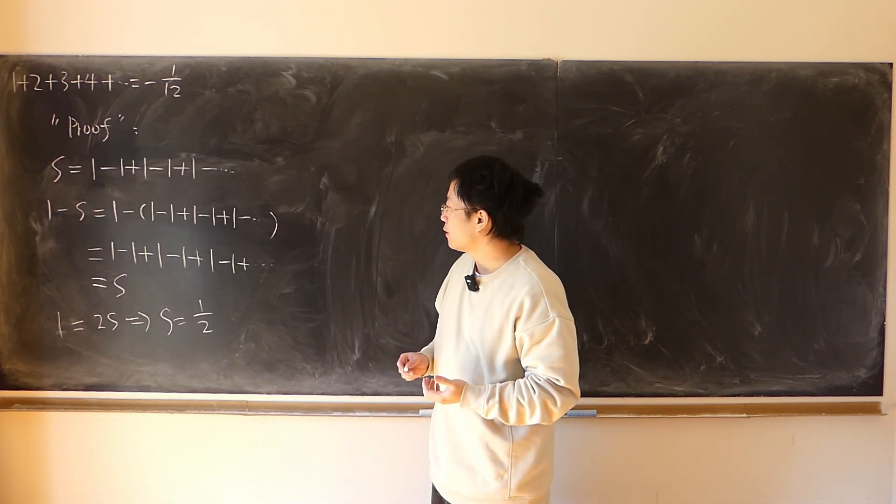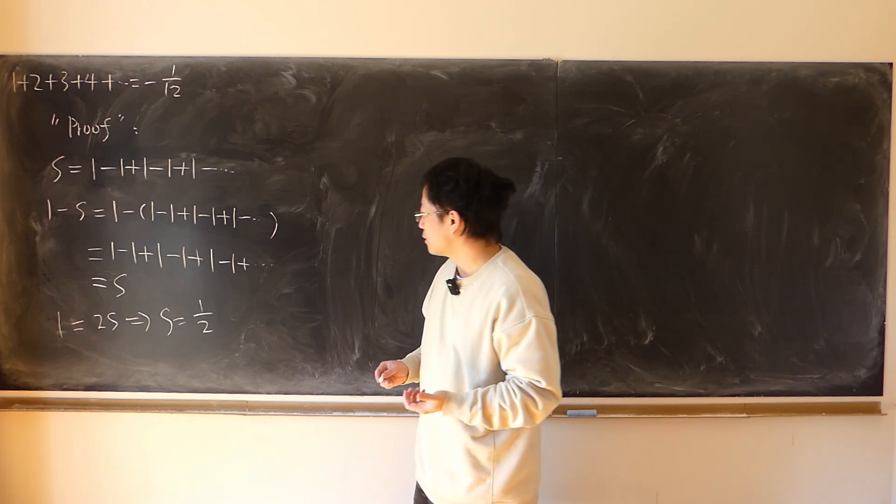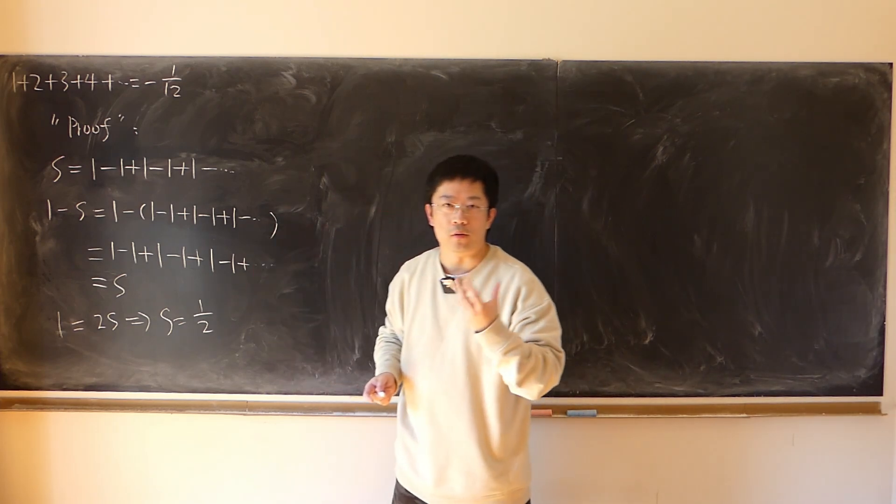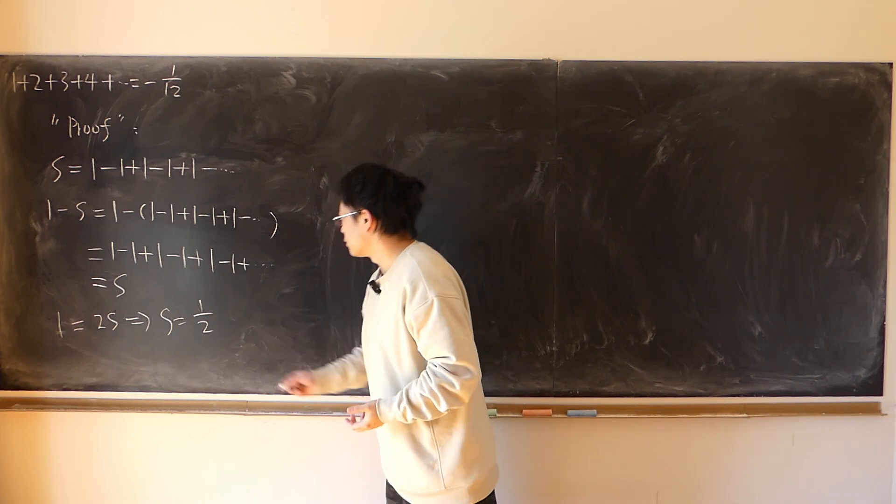But from an arithmetic mean point of view, average value, 0 and 1 is half. So it makes perfect sense.